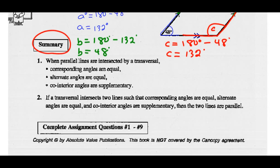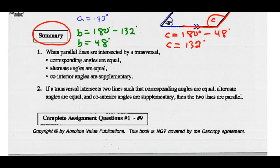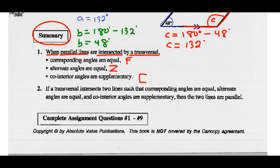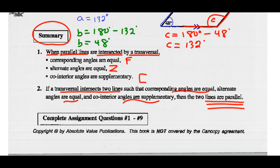A quick summary of what we've learned: when parallel lines are intersected by a transversal, corresponding angles are equal (F pattern), alternate interior angles are equal (Z pattern), and co-interior angles are supplementary (C pattern). Conversely, if a transversal intersects two lines such that corresponding angles are equal, alternate angles are equal, and co-interior angles are supplementary, then those two lines must be parallel — we're just working backwards with this one.